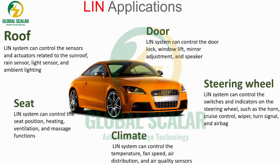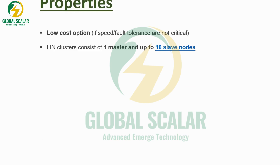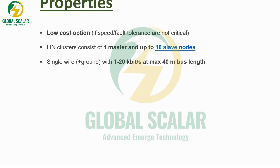Key properties of LIN: it is a low-cost option because it doesn't require high speed and fault occurrences are not critical. With a single line, short-to-battery or short-to-ground conditions are less of a concern. LIN supports one master and up to 16 slave nodes. It uses a single wire and operates at 1 to 20 kilobits per second, with a maximum bus length of 40 meters.